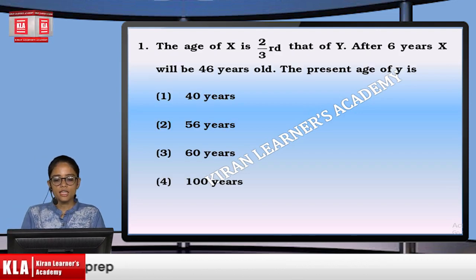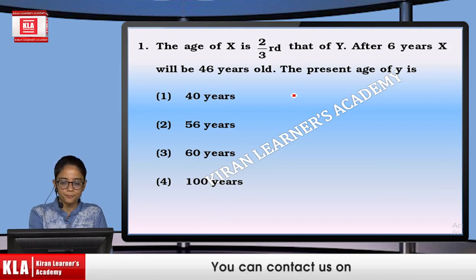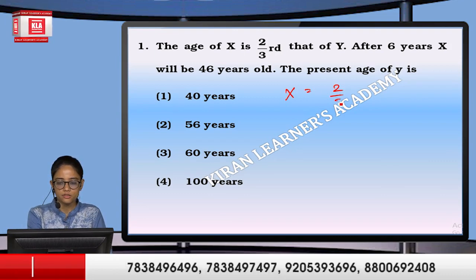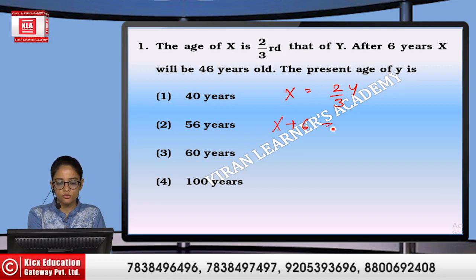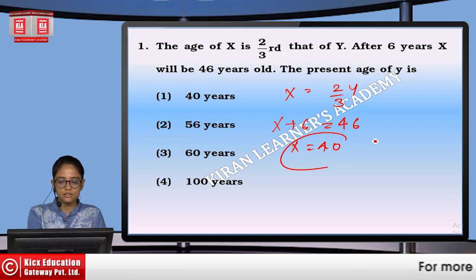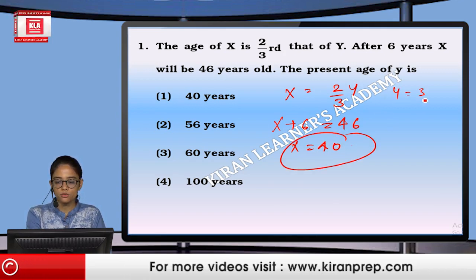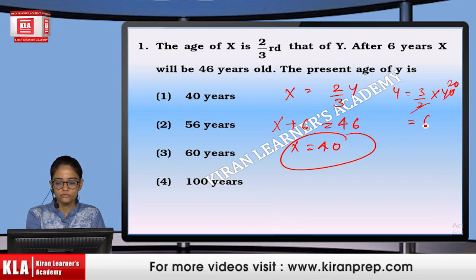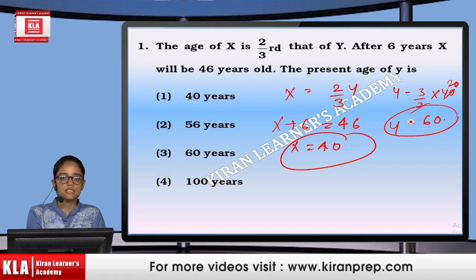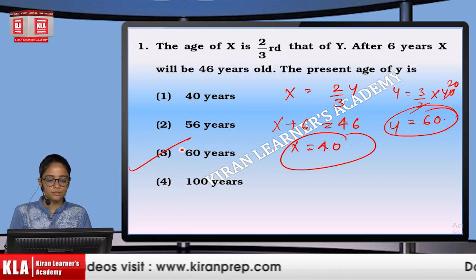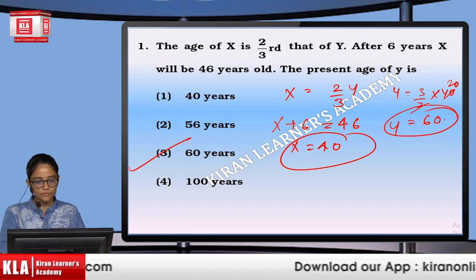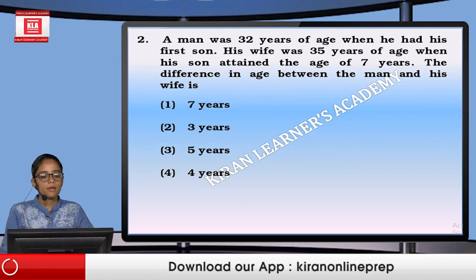First question: the age of X is two-thirds of Y, and after six years, X plus six equals 46. So X at present is 40 years. The present age of Y will be three-halves of 40, that means Y is 60 years. That is option number 3.